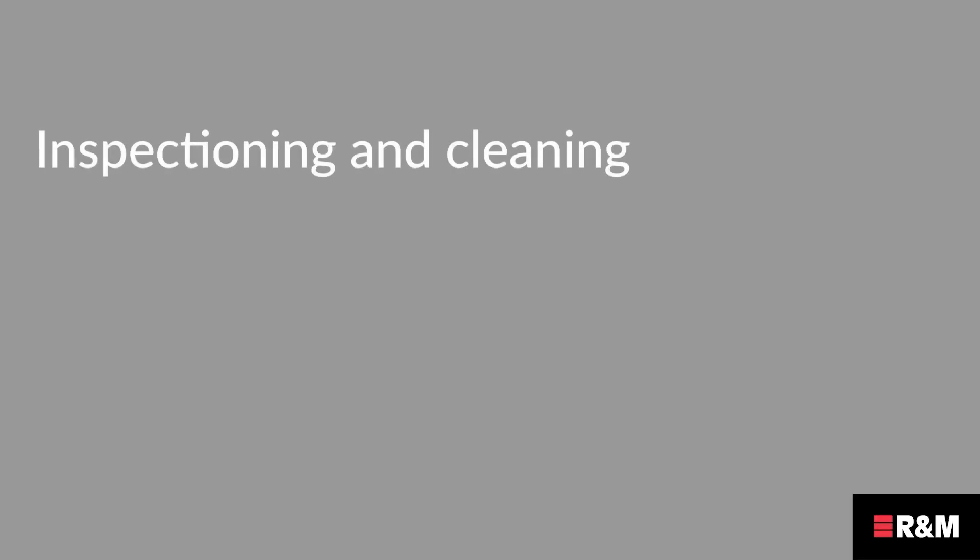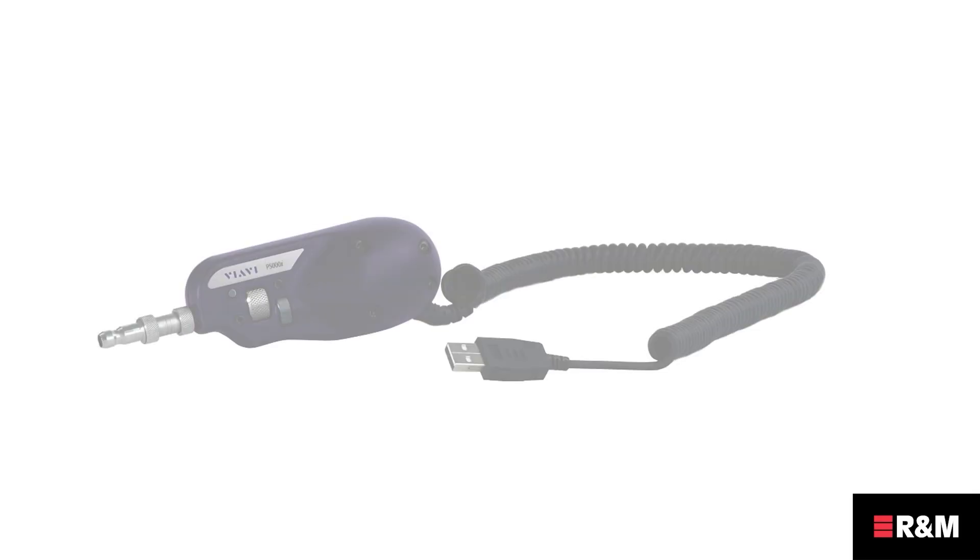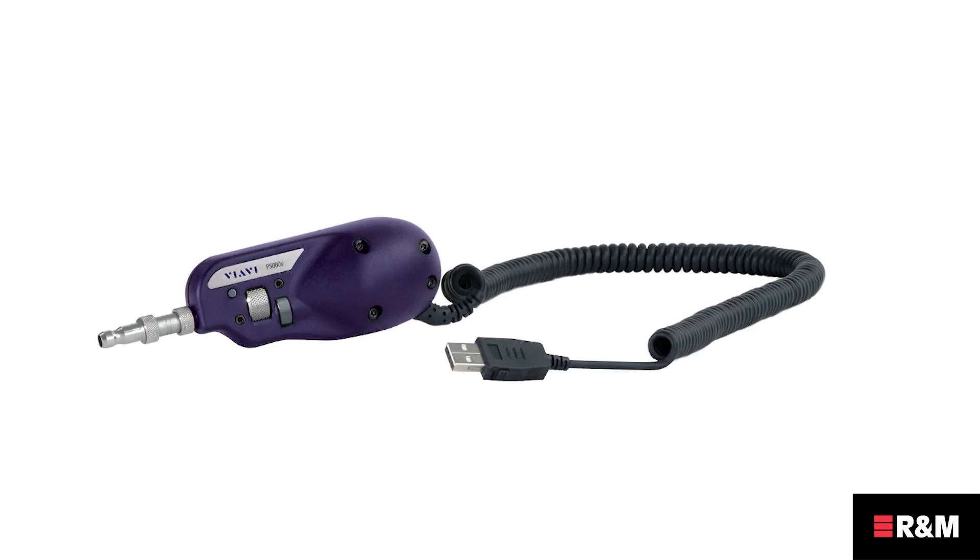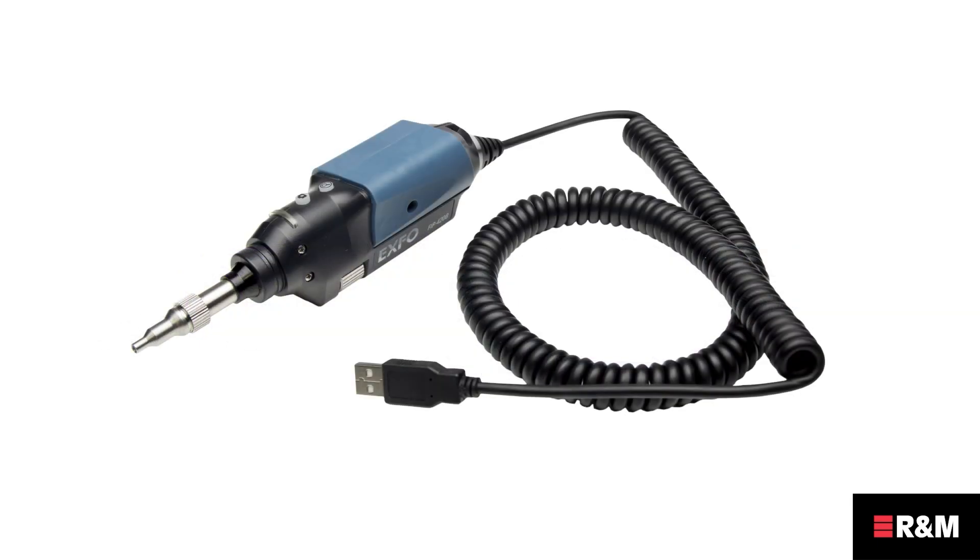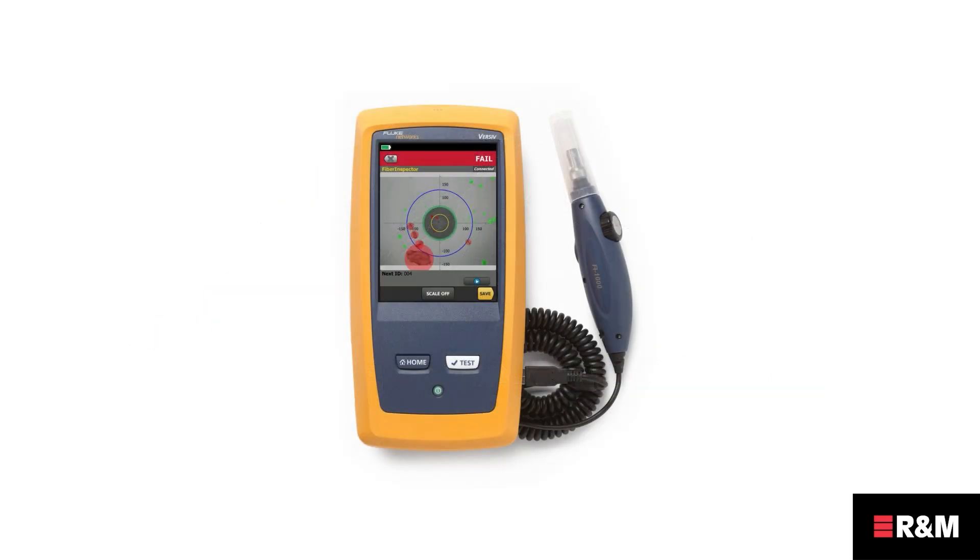Inspection and cleaning is an essential part to all testing procedures. Firstly, the condition and quality of the reference cords must be verified by inspection. In order to check the connector quality of the test reference cords, a microscope must be used. There are different kinds of microscopes on the market. We at R&M strongly recommend the use of video probes. These are 100% safe and can even be used to check the connector quality of active fibers.